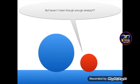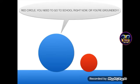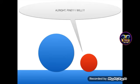But haven't I been through enough already? Red Circle, you need to go to school right now, or you are grounded. Okay, fine, I will!